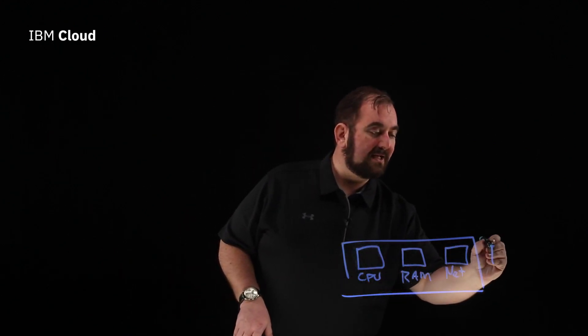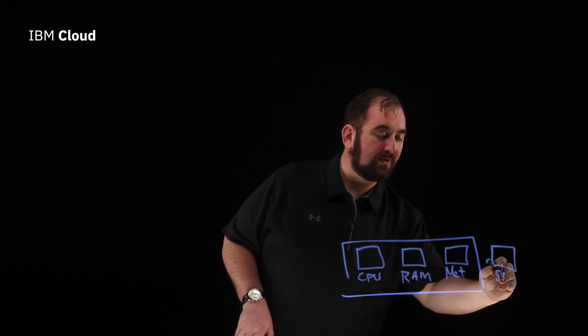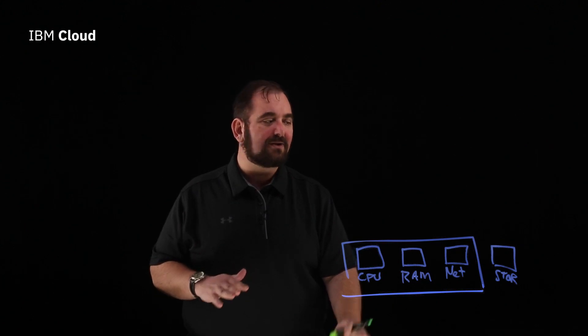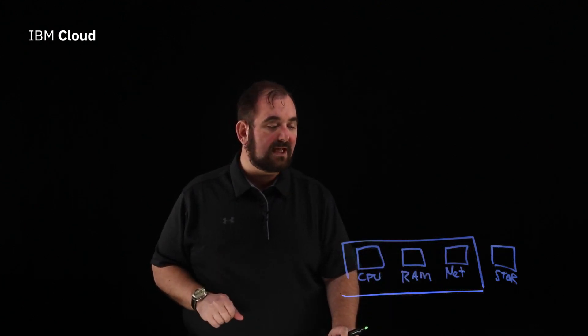The compute host will probably have, but isn't guaranteed to have, a fourth piece — we're going to call this storage. Why do we put storage over to the side? It's because the hypervisor doesn't necessarily virtualize the storage, and that's okay. So this is our compute host — it could be a server in a data center, or it could be a desktop or a laptop sitting on your desk.